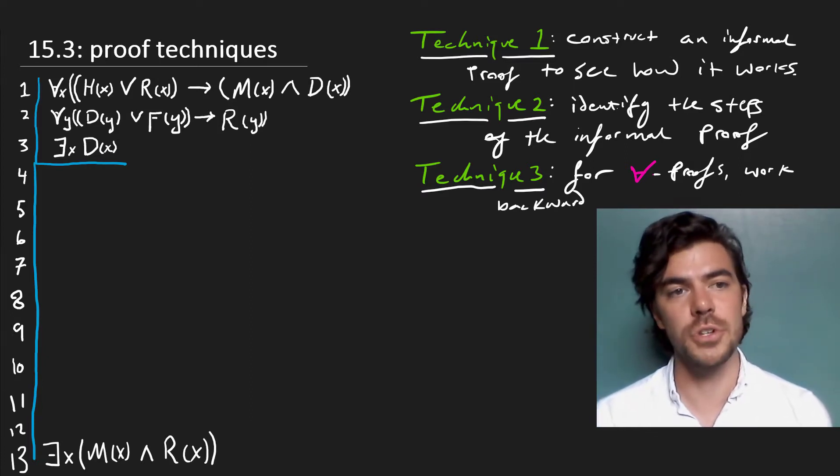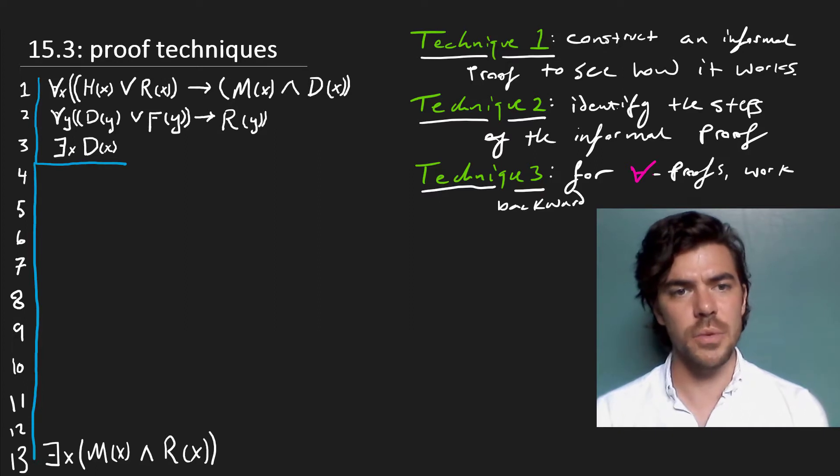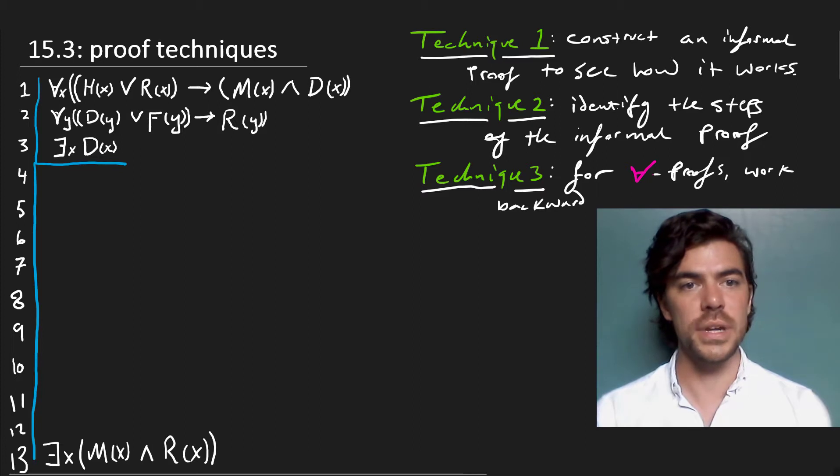But then by our first premise, we can see that if E is an H or E is an R, then E is an M and E is a D. What we want to show is that E is an M and E is an R, but we can see already the way to do this because by showing that E is a D, we get by the second premise that E is an R, and then by showing that E is an R, we can get by the first premise that E is an M.